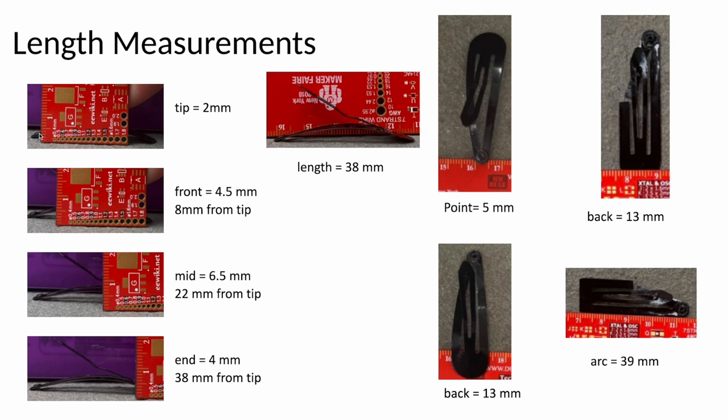The tip here, the eyelet, was 2 millimeters up. A random point in the front of the hair clip was 4.5 millimeters above the ground and 8 millimeters from the tip. The highest point I labeled as mid, 6.5 millimeters up, and it's 22 millimeters away from the tip. And the end point here is the end of where I'm measuring the hair clip, and it's 4 millimeters off the ground and 38 millimeters from the tip.